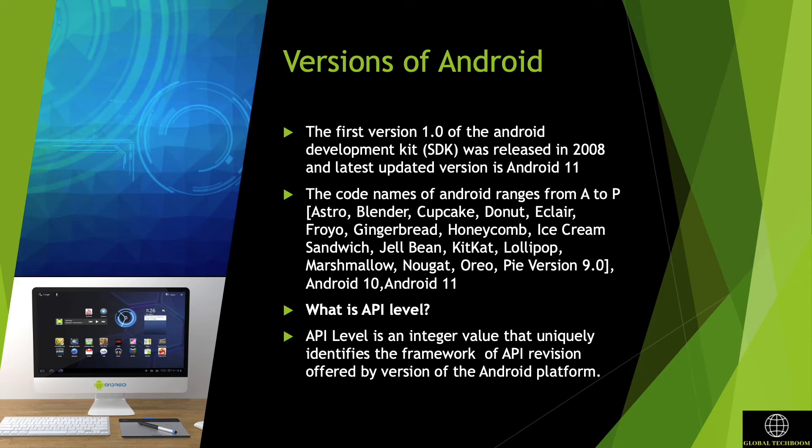The Android operating system has evolved over time both in terms of user interface and security. It also improves in terms of performance and the software possibilities it offers. API level identifies each framework API revision for different Android versions.